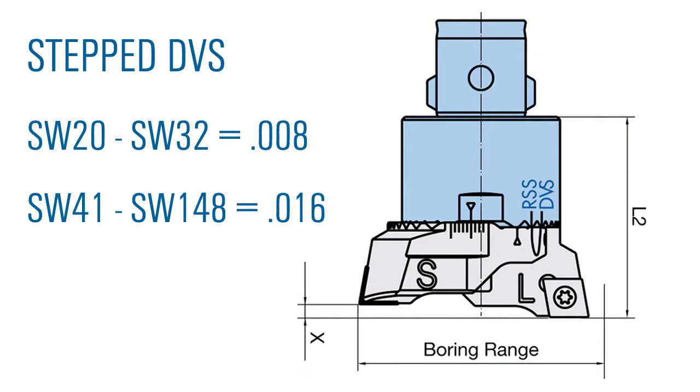The height difference for stepped cutting is a fixed amount. For boring head sizes 20 to 32, the step is 8 thousandths. For larger heads, the step is 16 thousandths.